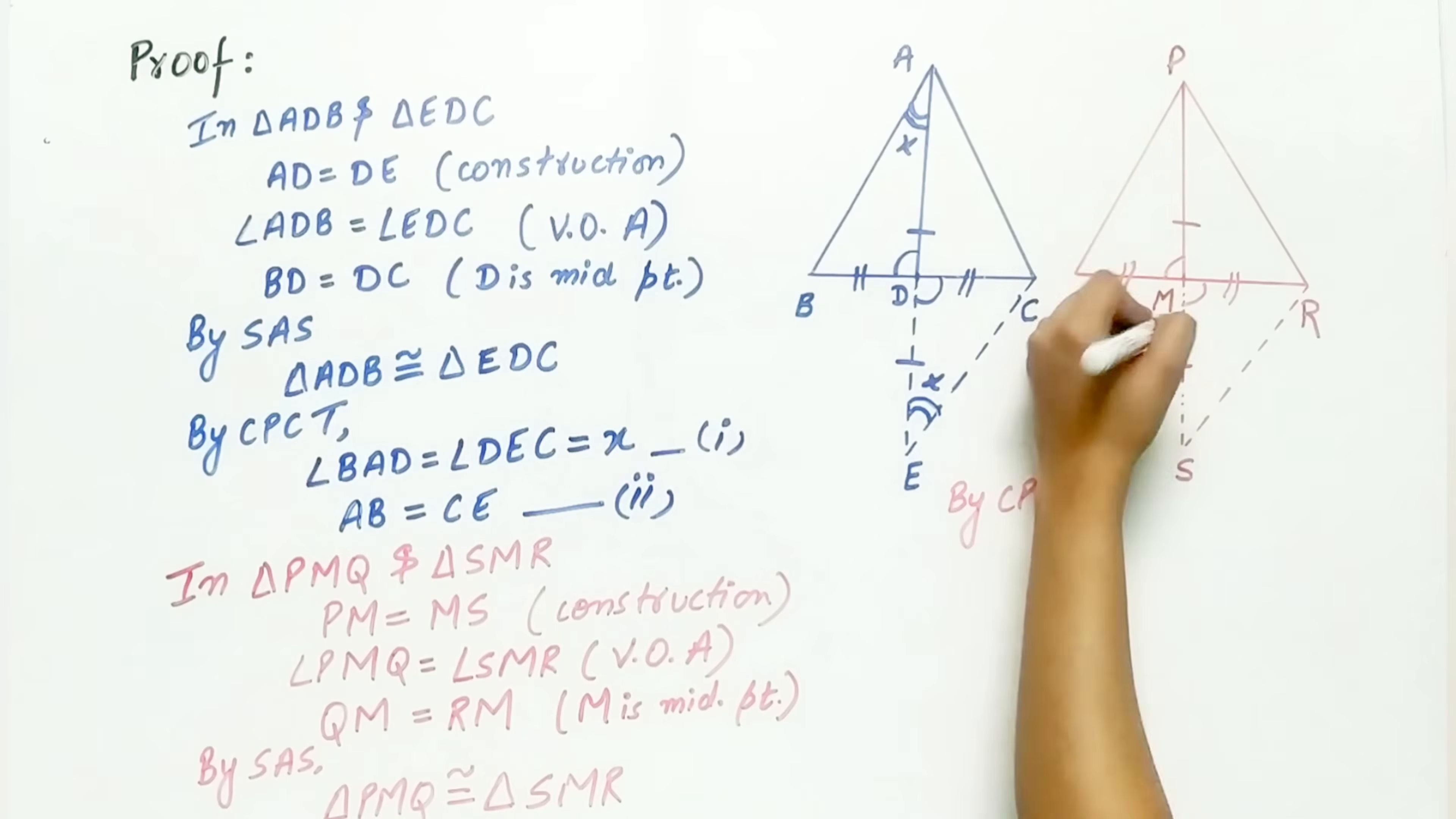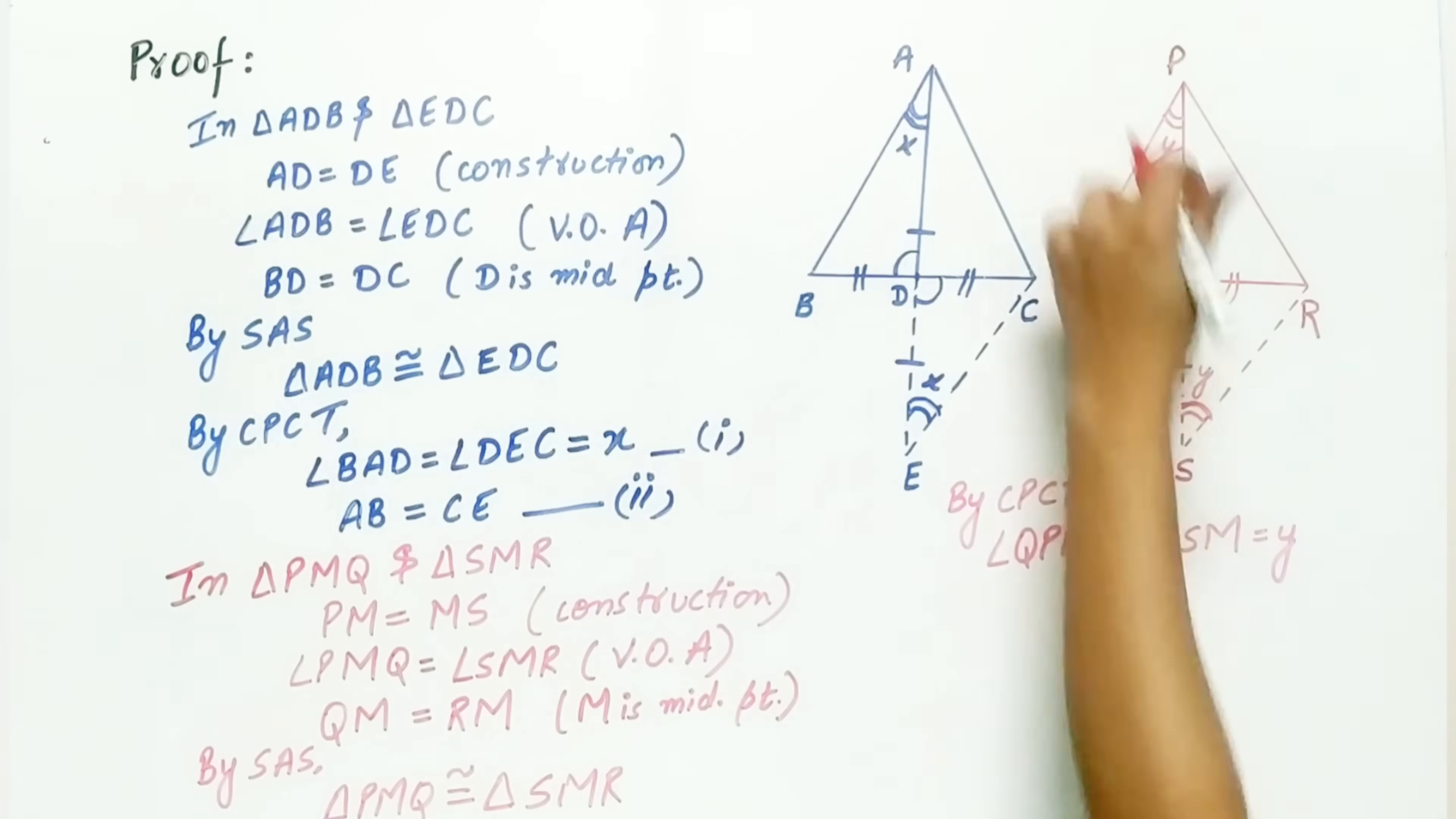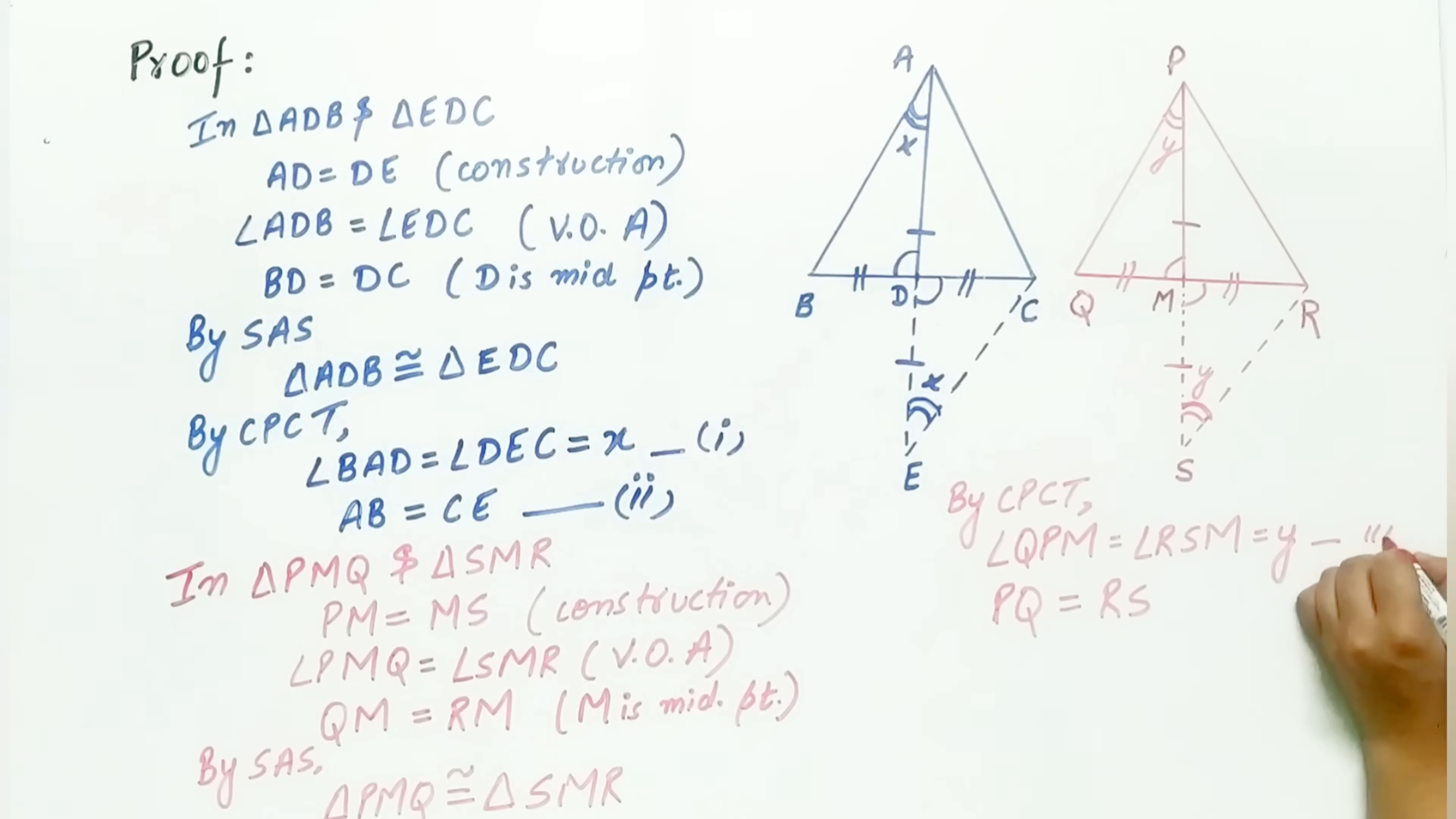angle QPM is equal to angle MSR, which is let it be equal to Y. And side PQ is equal to RS. Let it be 3rd. And let it be 4th.